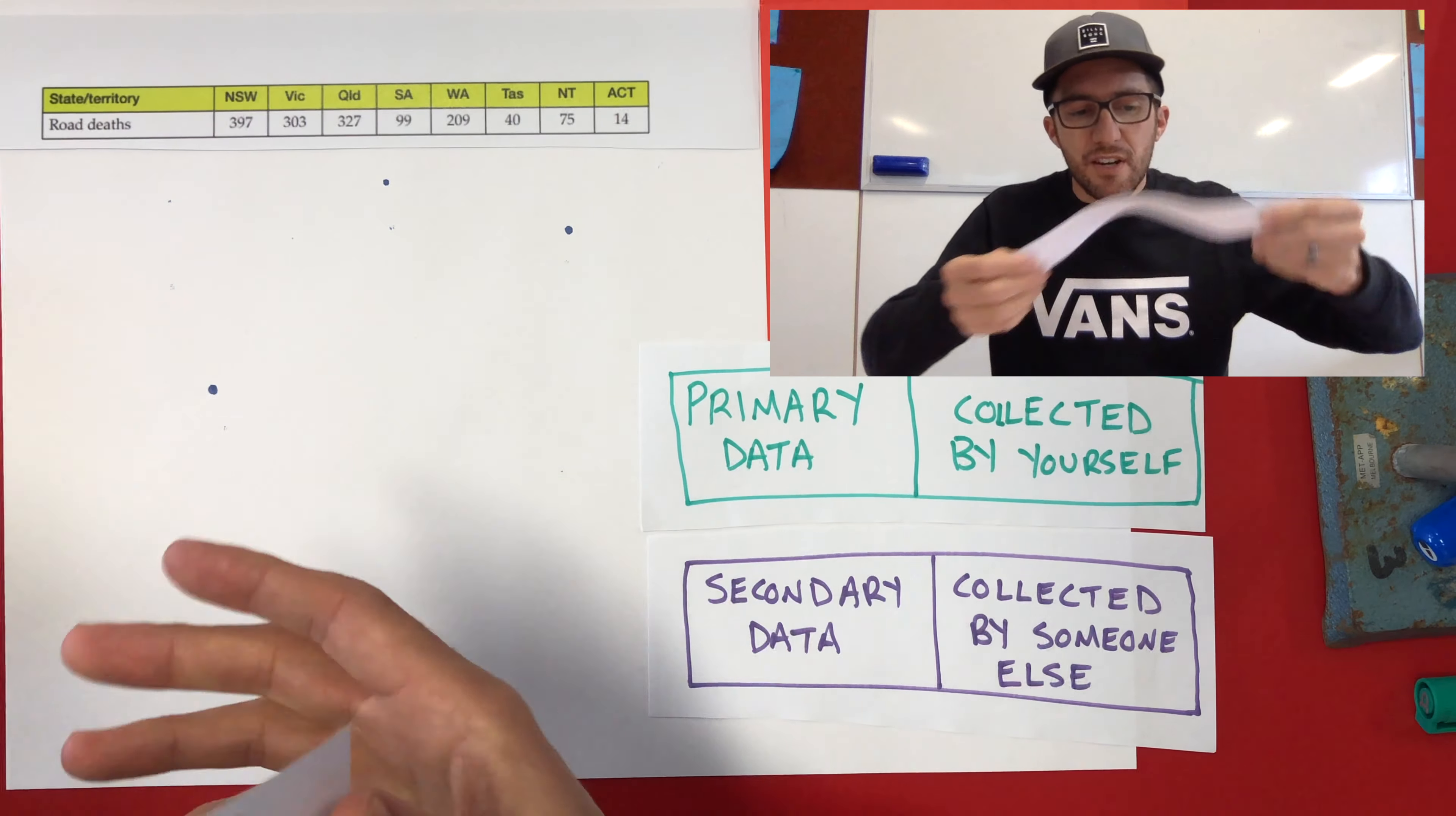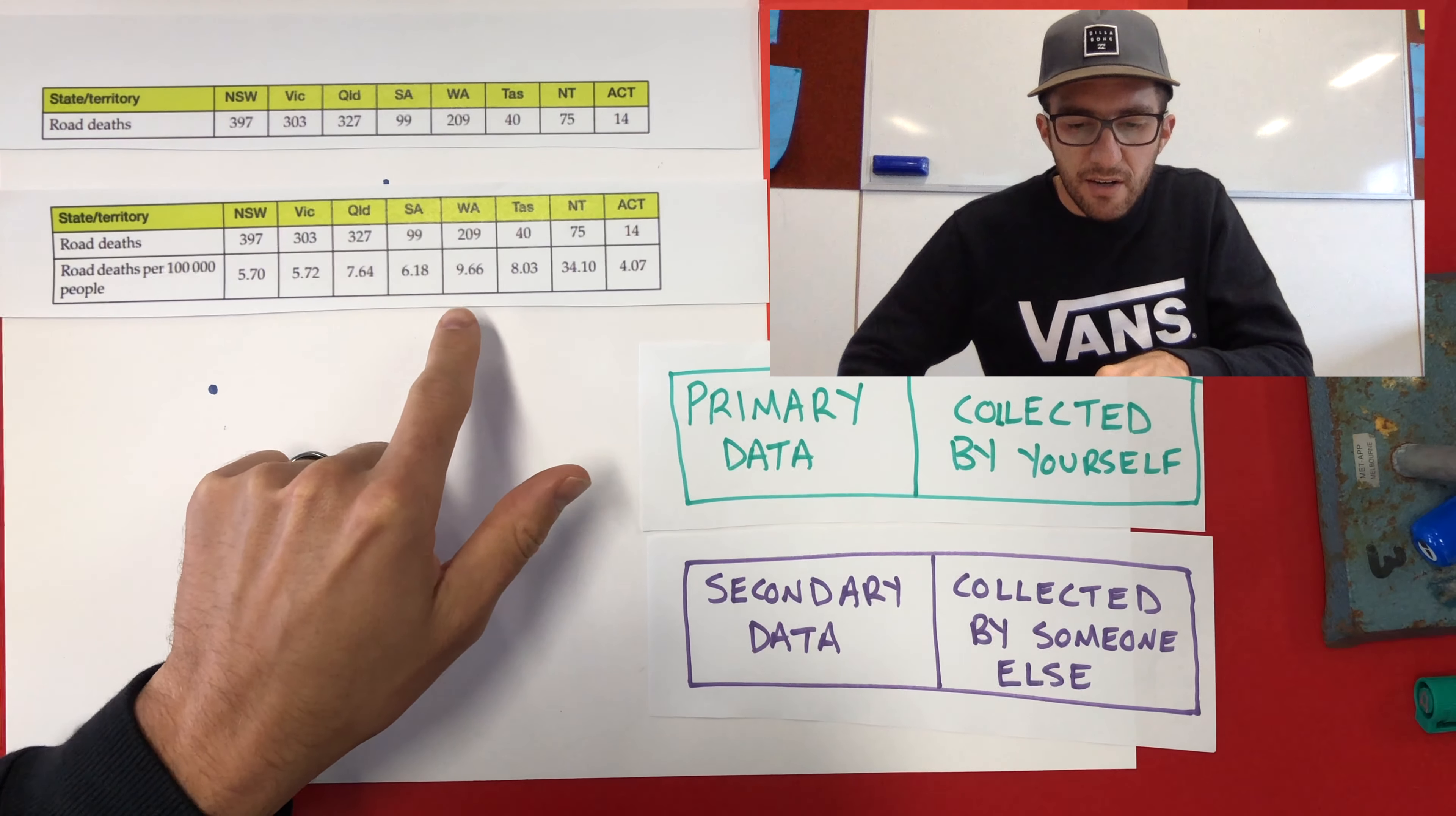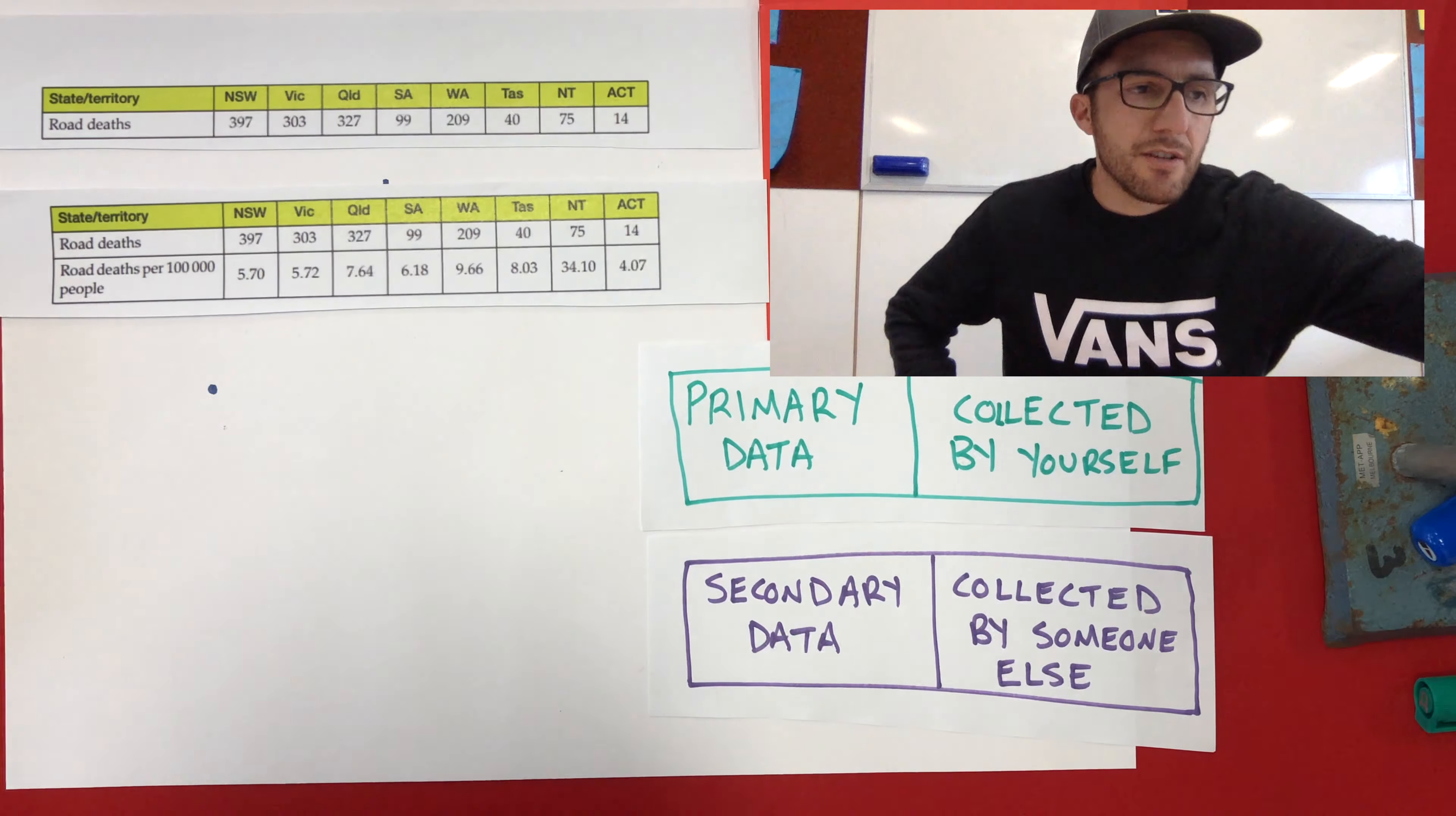So let's look at the same data, but now similar to the coronavirus data. This is road deaths per 100,000 people. So this is for every 100,000 people that live there in New South Wales. There are 5.7 deaths for road crashes. And if we have a look down the table, South Australia up to six, WA nine, Tassie eight. So these are all higher than New South Wales. Northern Territory, 34. So look back at the original table, 75 deaths in total. But because they don't have a big population, they actually have 34 deaths for every 100,000 people that live there, which is a lot higher than the other states and territories, isn't it?